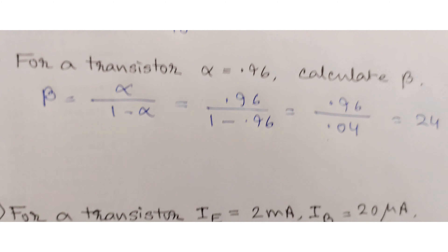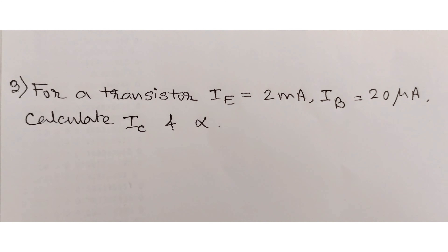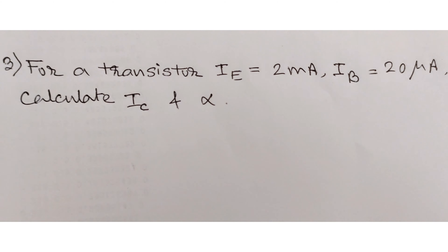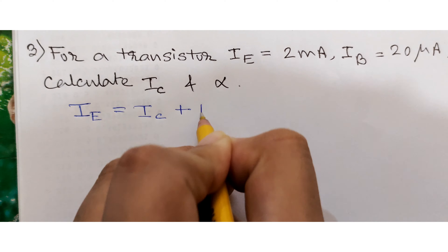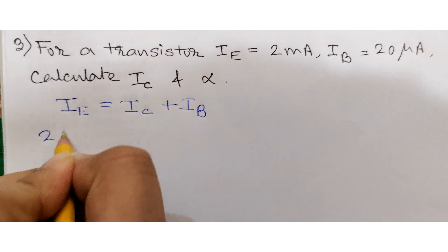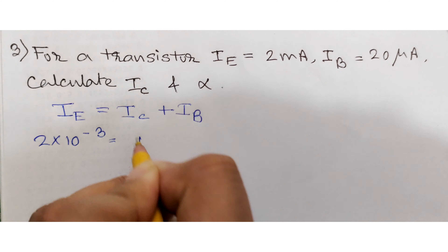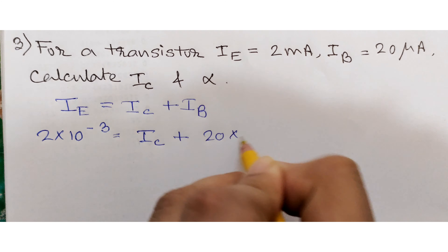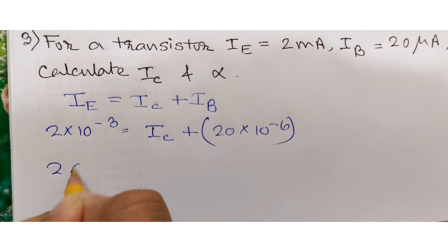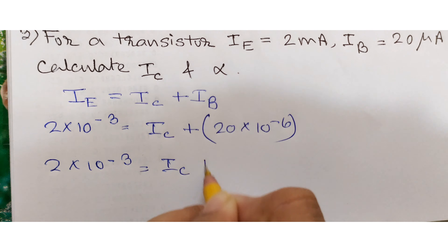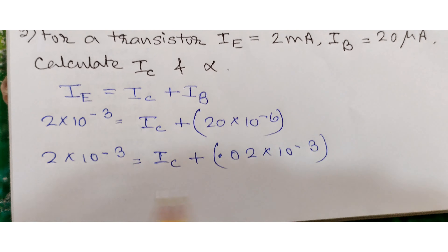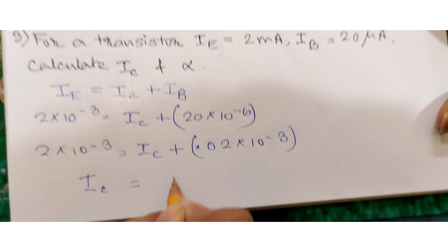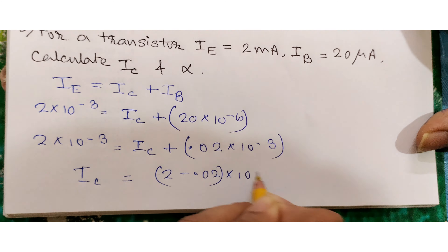Moving on to the last problem: for a transistor, the emitter current is 2 milliamperes and the base current is 20 microamperes. Calculate the collector current and alpha. We know that IE equals IC plus IB. So 2 × 10⁻³ equals IC plus 20 × 10⁻⁶. Converting 20 microamperes: that is 0.02 × 10⁻³ amperes, so we can express everything in units of 10⁻³.